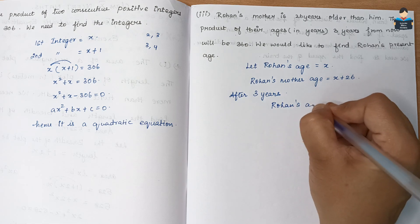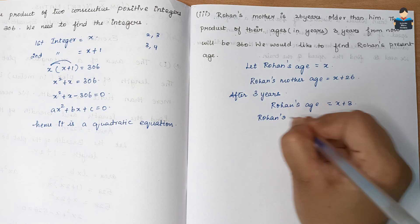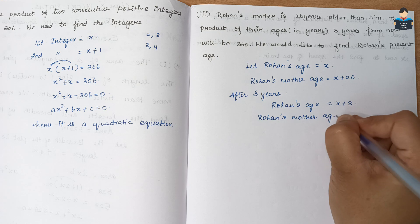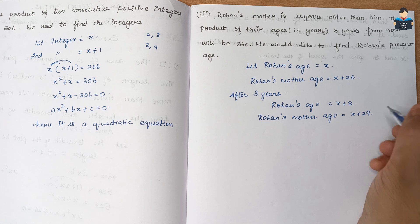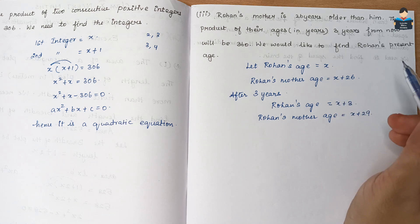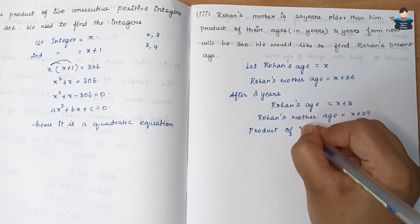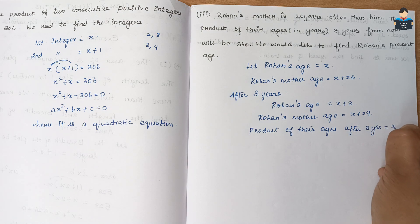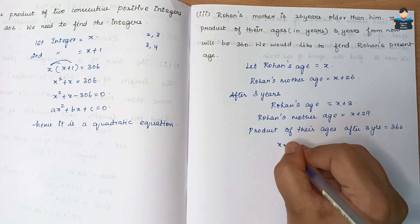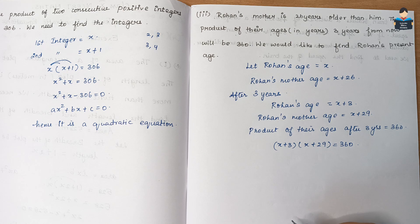Three years from now, Rohan's age will be x + 3 and Rohan's mother's age will be x + 29 (that is x + 26 + 3). The product of their ages after 3 years equals 360: (x + 3)(x + 29) = 360.